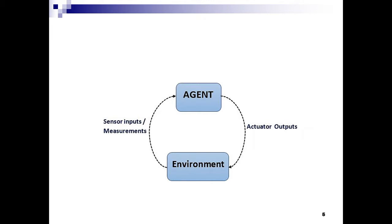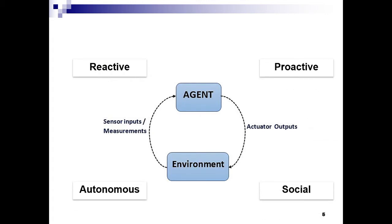The agents in a multi-agent system are software and hardware entities that take sensory inputs from their environment and generate outputs. They are reactive, proactive, autonomous, and social in nature. In addition to these inherent qualities, my research introduces intelligence to the agents through reinforcement learning.